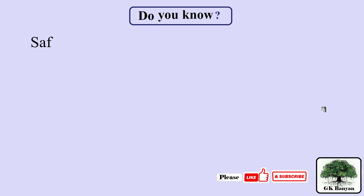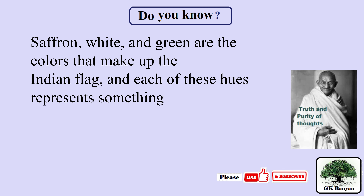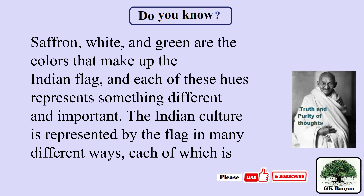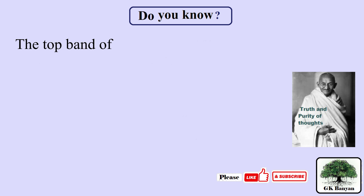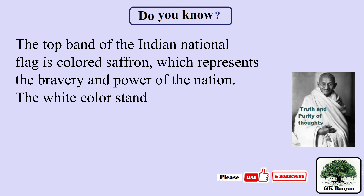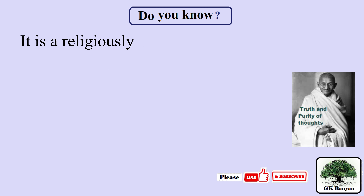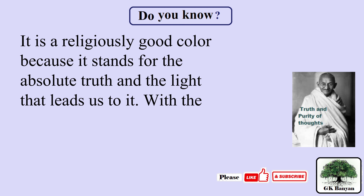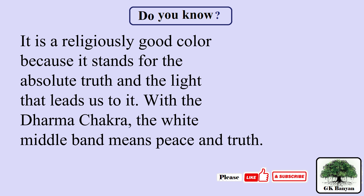Saffron, white and green are the colors that make up the Indian flag, and each represents something different and important. The top saffron band represents the bravery and power of the nation. The white color stands for both truth and purity of thoughts — it is a religiously significant color representing absolute truth and the light that leads us to it. With the Dharma Chakra, the white middle band means peace and truth.